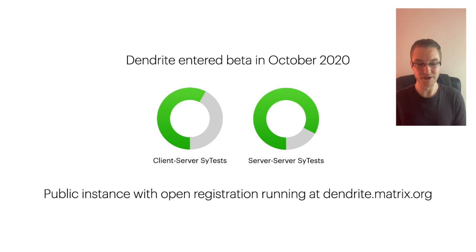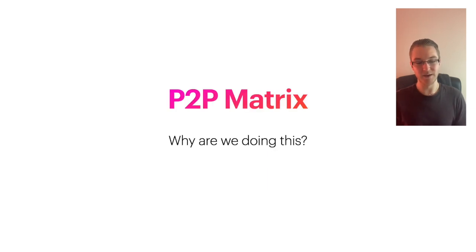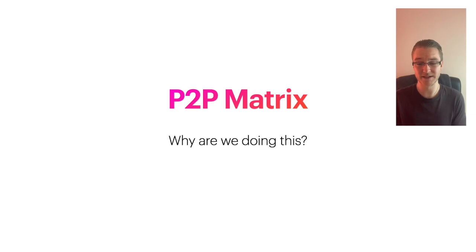At the end of December, we also took the step to build our own public Dendrite instance at dendrite.matrix.org, which is open for public registration. If you want to see how using Dendrite feels without having to build your own, this is the way to do it. As well as being able to scale up, we've proven that Dendrite can also very efficiently scale down, which has made it the perfect testing ground for our P2P experiments.